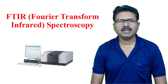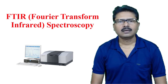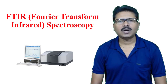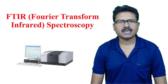FTIR is a method of obtaining infrared spectra by first collecting the interferogram of the signal using an interferometer, and then performing a Fourier transform on the interferogram to obtain the spectrum. That spectrum is the ultimate display used to identify the functional group of an unknown sample.